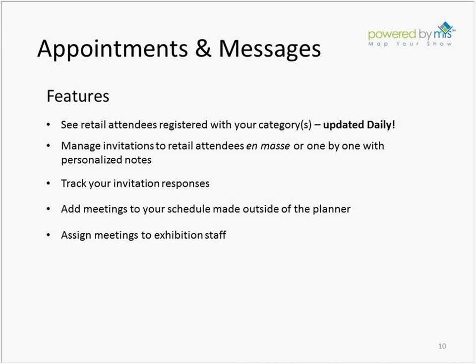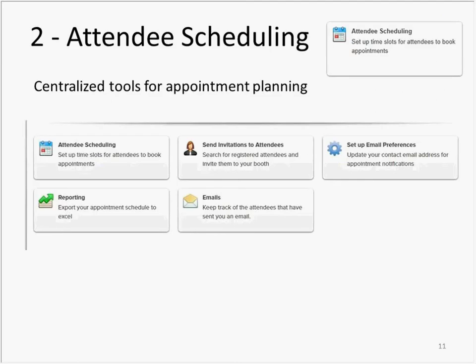The Appointment Planner allows you to manage invitations to retail attendees en masse or one by one with personalized notes, track your invitation responses, add meetings to your schedule made outside of the planner, and assign meetings to specific exhibition staff. Map Your Show has centralized the tools for appointment planning into one screen. Under email preferences, exhibiting companies have the option of listing up to five email addresses to receive notifications when an appointment has been scheduled or canceled. These may be modified at any time during show planning.